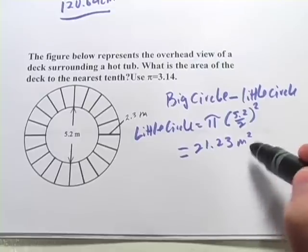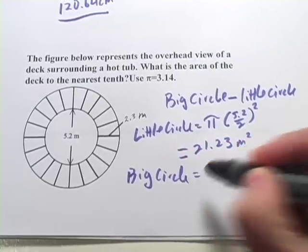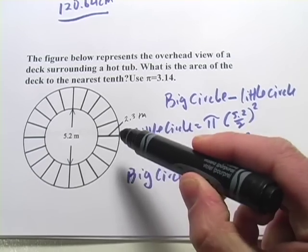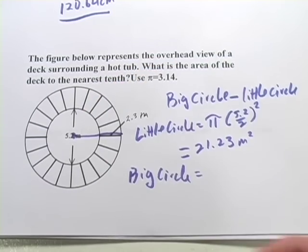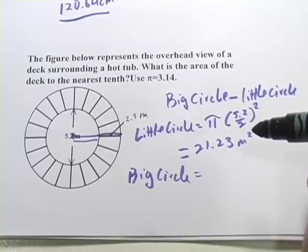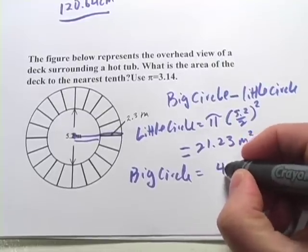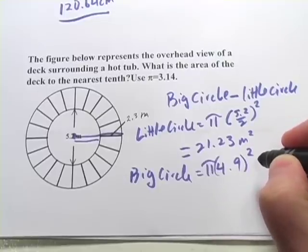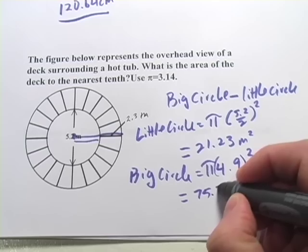Now that's the little circle. The big circle is going to be, well, it's actually a little tricky. They don't give us the radius of the big circle. The radius of the big circle would be from here all the way to here. So you would take half of that 5.2 distance and add 2.3 to it. So that radius is actually going to be 4.9. So it's pi times 4.9 squared, and that comes out to 75.39.